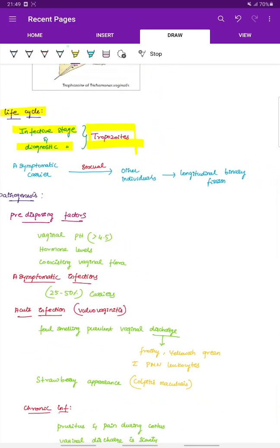The spread is from asymptomatic carrier to sexual route. It enters other individuals where there is longitudinal binary fission of the trophozoids.